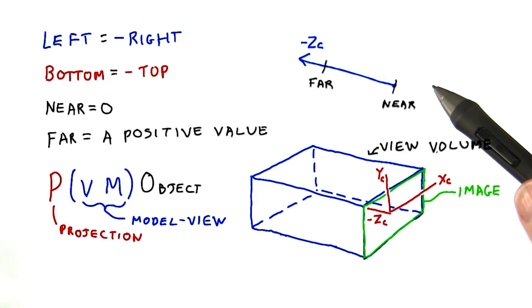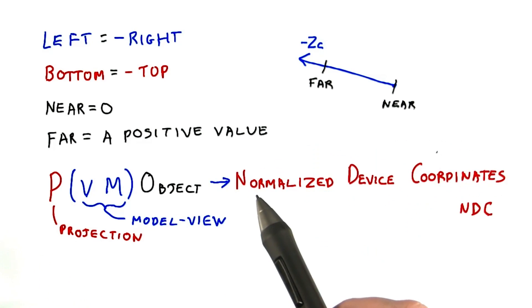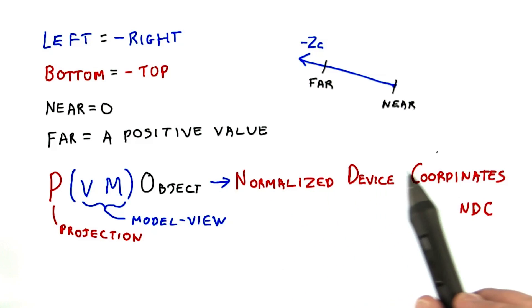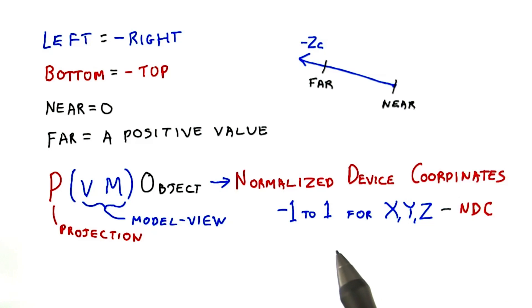Our chain of matrices adds this projection to the front. In other words, the projection is applied next. When applied, a coordinate will get a new value in this projection's frame of reference. This frame uses what are called normalized device coordinates, or NDC for short. These NDC coordinates are in the range negative 1 to 1 for X, Y, and Z. We'll talk more about this transform in a minute, but the point is that whatever is inside the box will have coordinates transformed to this new range.